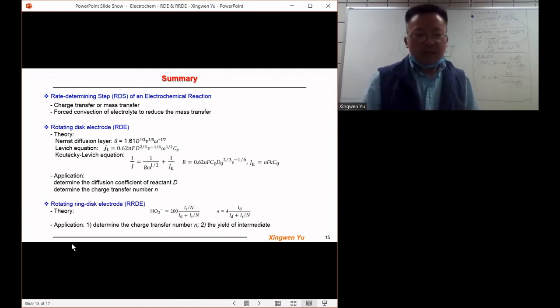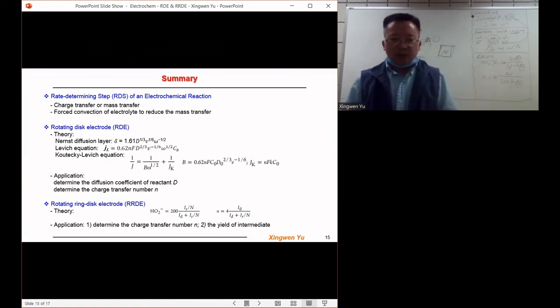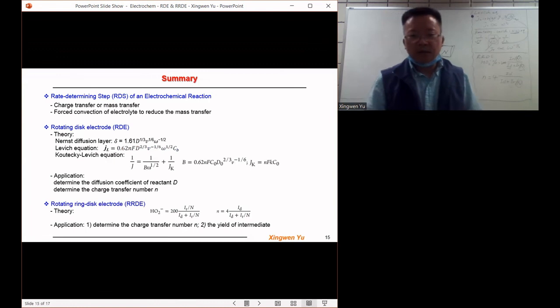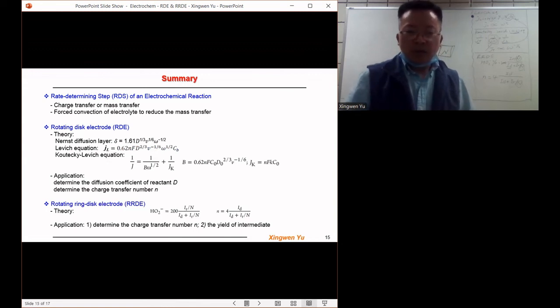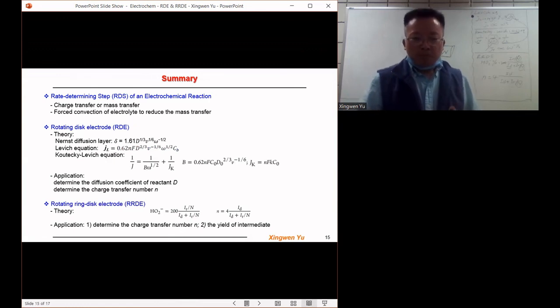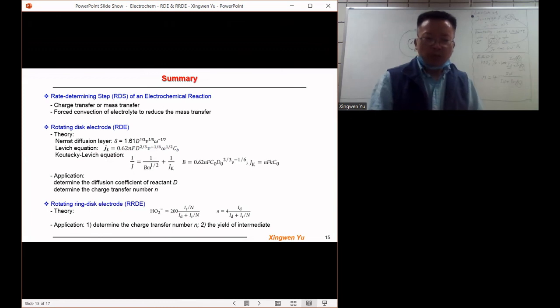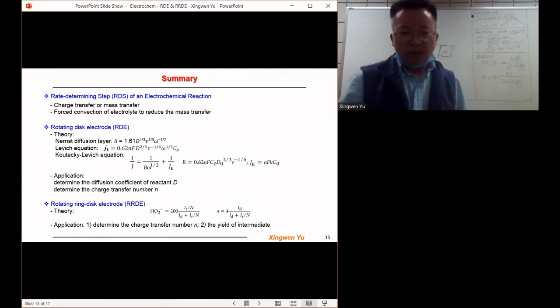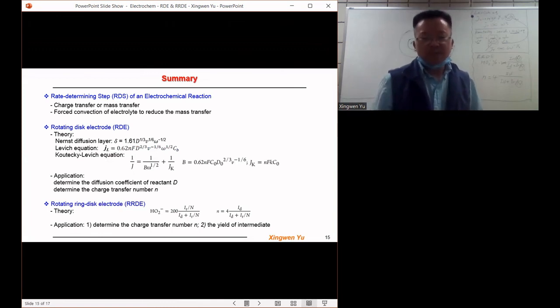And finally, we studied the rotating ring-disk electrode. The theory includes two important equations to calibrate the intermediate species and the charge transfer number. And the application that I gave is also based on the oxygen reduction reaction, in case it follows both the two electron transfer and the four electron transfer processes.